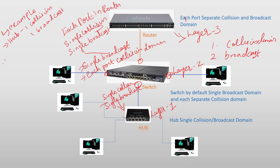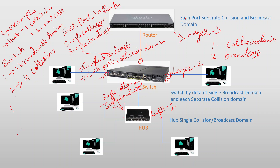Now let's look at this picture. By default configuration, single broadcast domain — one broadcast domain. If you look at the collision domain, each port has a single collision domain. If you look at this — how many ports are there? One, two, three, four. Each port is a single collision domain.